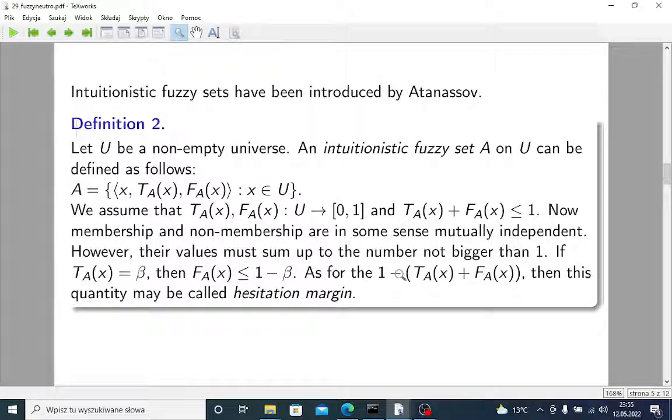And the rest - we have truth, falsity and maybe some non-zero rest, as it's written here. This is called hesitation margin. So we can say that certain element is 0.20 in our set, 0.40 not in our set, and 0.40 is hesitation margin.